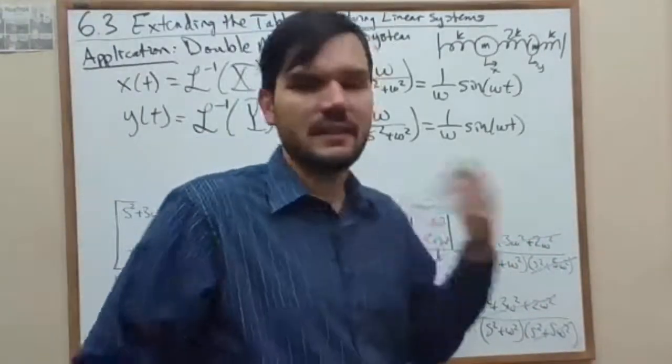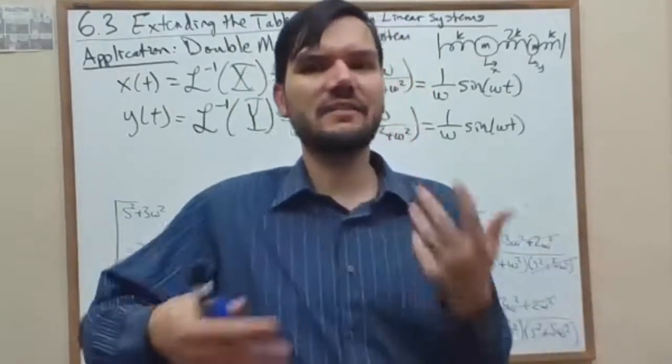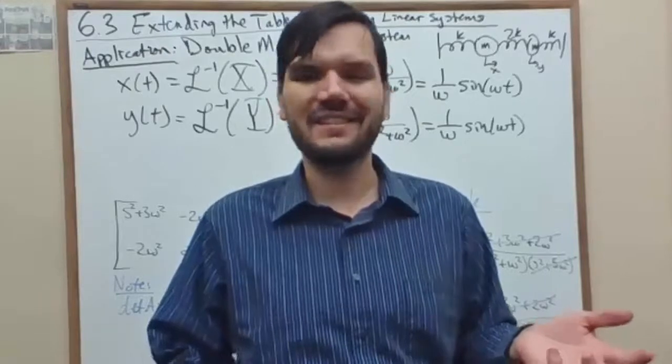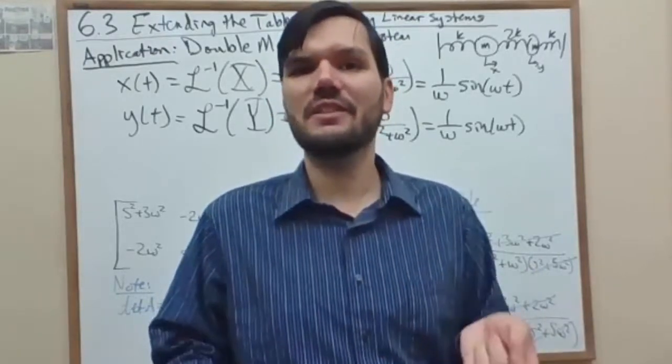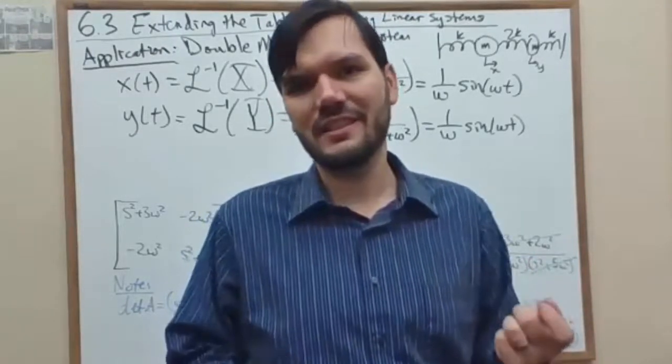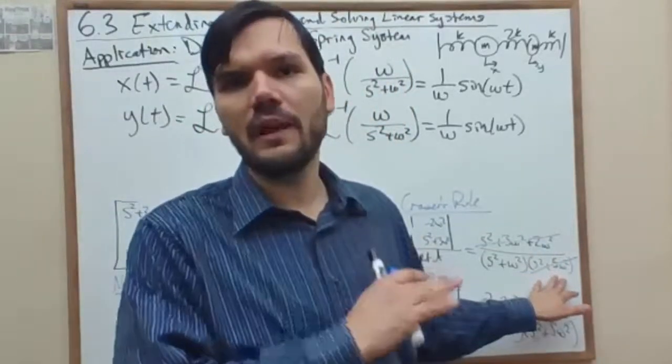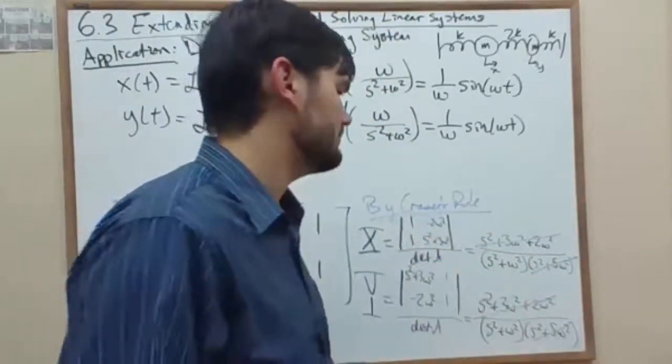So, the initial conditions, again, don't tell you what kinds of ingredients you're using, but they do control how much of each. And our particular choice of initial velocities and positions this time canceled out and told us, you know what, we're not having any bananas. This is a full apple smoothie right here.